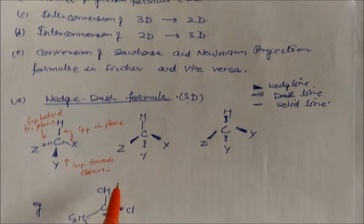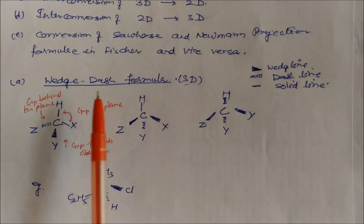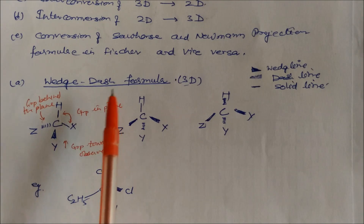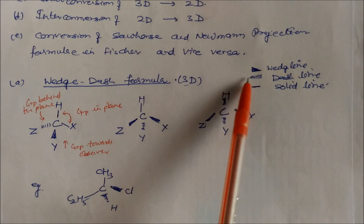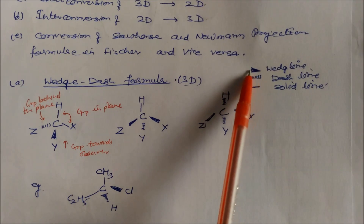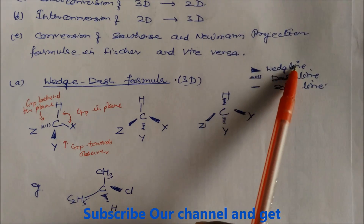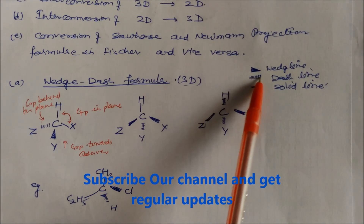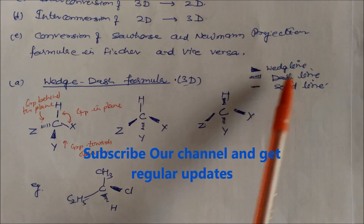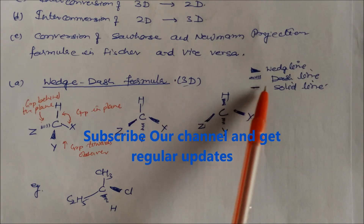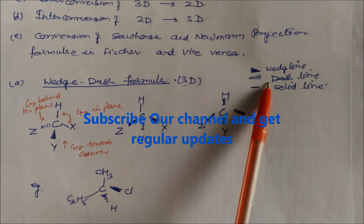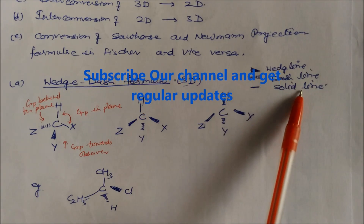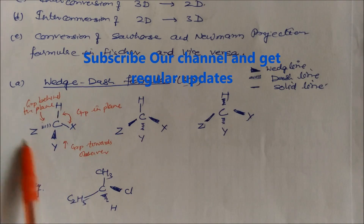The first is the wedge-dash formula for three-dimensional molecules. A wedge line is represented as a thick line that narrows down, while a dash line starts narrow and broadens — these indicate bonds coming toward or going away from the observer. A solid straight line represents bonds in the plane. There are three types of line representation in this formula.